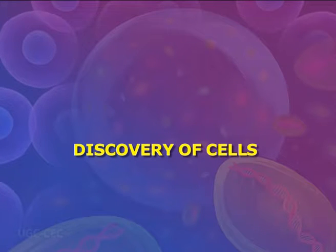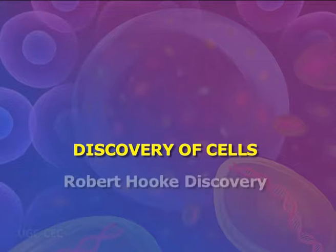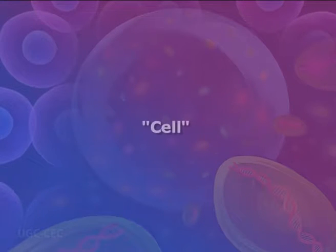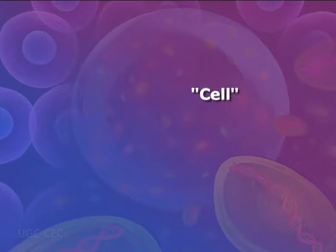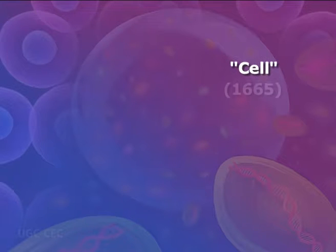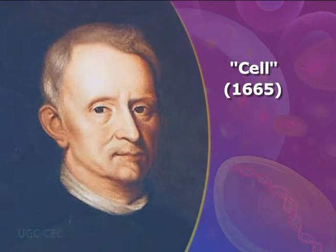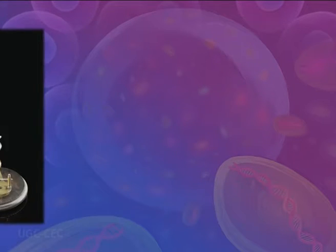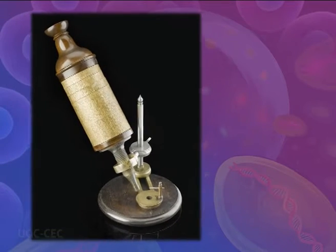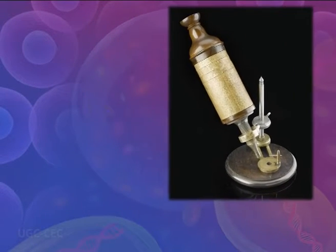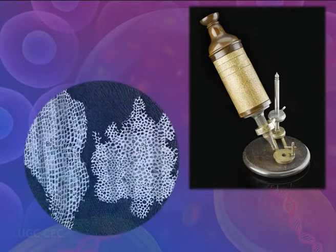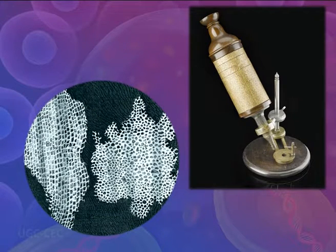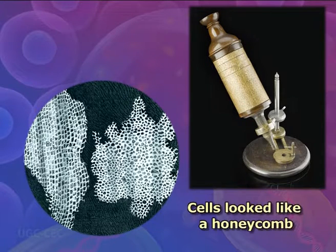We will see how cells were discovered. The first time the word 'cell' was used to refer to these tiny units of life was in 1665 by a British scientist named Robert Hooke. Hooke was one of the earliest scientists to study living things under a microscope. When he looked at a thin slice of cork under his microscope, he was surprised to see what looked like a honeycomb.